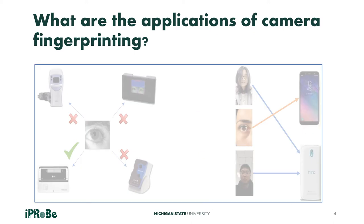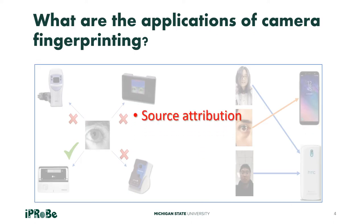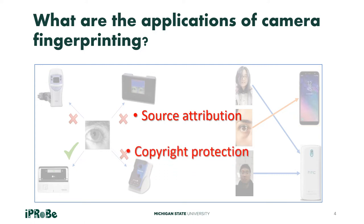What are the applications of camera fingerprinting? It can be used to identify the source or origin of an image and is useful in the field of digital image forensics. Secondly, it can be used as a copyright protection tool in the field of multimedia security.